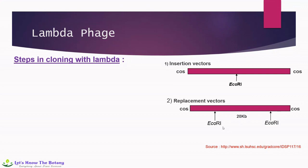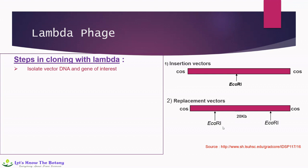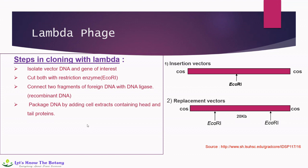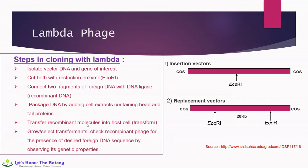The steps for cloning with lambda phage are as follows: First, isolate the vector DNA and gene of interest. Cut both with the restriction enzyme EcoRI. In the figure you may find the two cos ends, which can be cut with EcoRI. Then connect two fragments of foreign DNA with DNA ligase enzyme to prepare the recombinant DNA. Package the DNA by adding cell extracts containing head and tail proteins. Transfer recombinant molecules into the host cell — the transformation stage. Finally, grow and select transformants, and check recombinant phage for the presence of the desired foreign DNA sequence by observing its genetic properties.